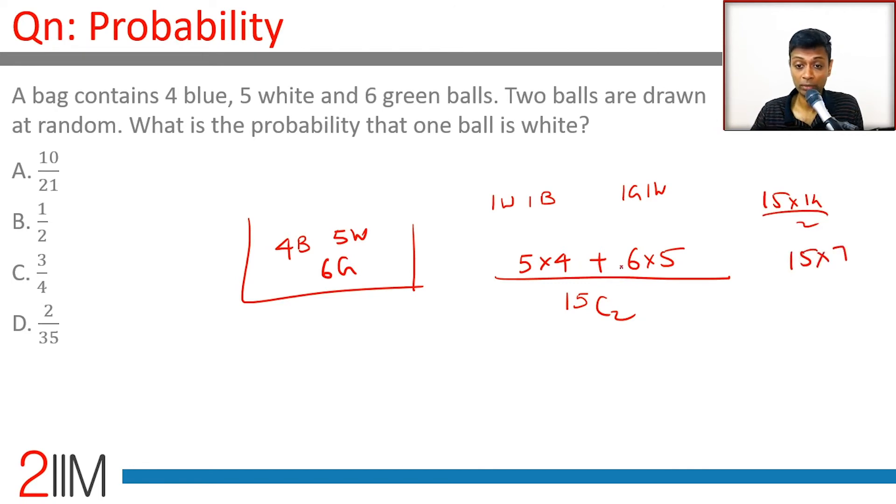The numerator is 5 times 10. So we have 5 times 10 divided by 15 times 7. Simplifying that, we get 10 divided by 21.